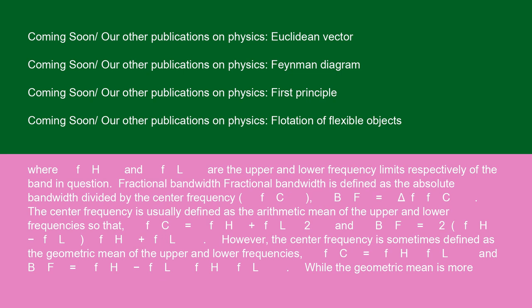where FH and FL are the upper and lower frequency limits respectively of the band in question. Fractional bandwidth: fractional bandwidth is defined as the absolute bandwidth divided by the center frequency, FC, BF equals delta F over FC. The center frequency is usually defined as the arithmetic mean of the upper and lower frequencies, so that FC equals FH plus FL over 2 and BF equals 2 times FH minus FL over FH plus FL.